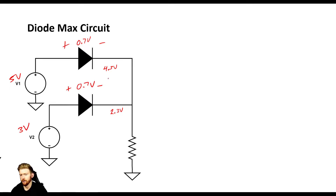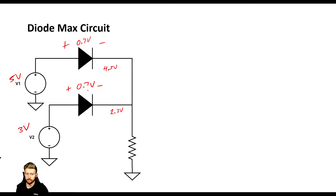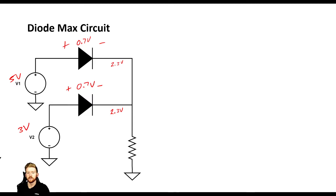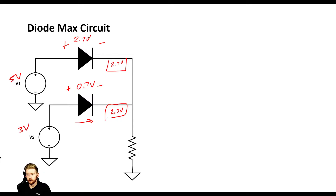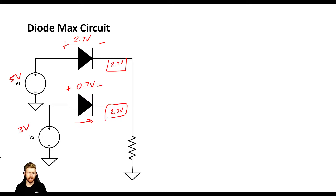This doesn't make sense because these two nodes are tied together — they can't both have different voltages simultaneously, so something has to give. If we assume 3 volts is conducting and the output node is at 2.3 volts, then there would be a 2.7 volt drop across the V1 diode in the forward direction. That would cause a huge amount of current to flow, which contradicts our assumption of a 0.7 volt forward drop. So this case doesn't work.